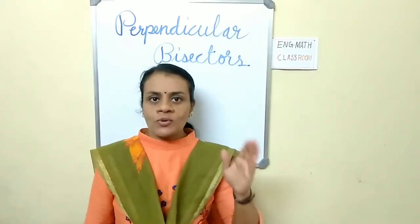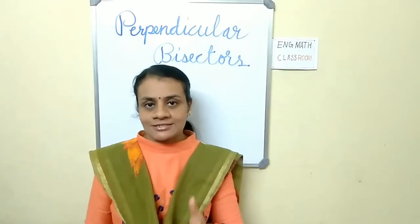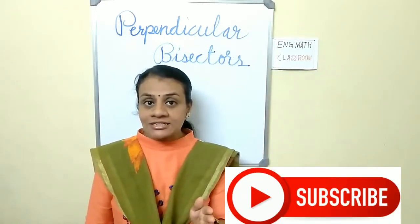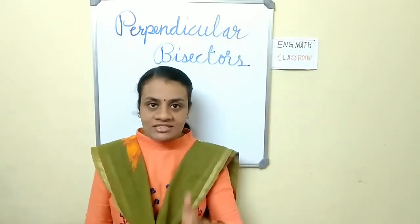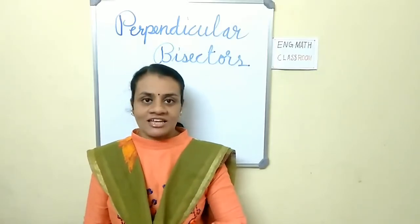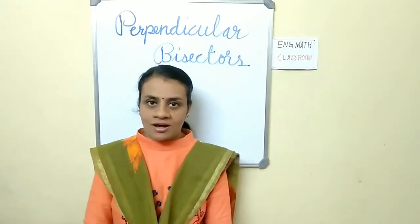Before moving to that section, what is a bisector? A bisector is a line which divides another line into two equal parts.